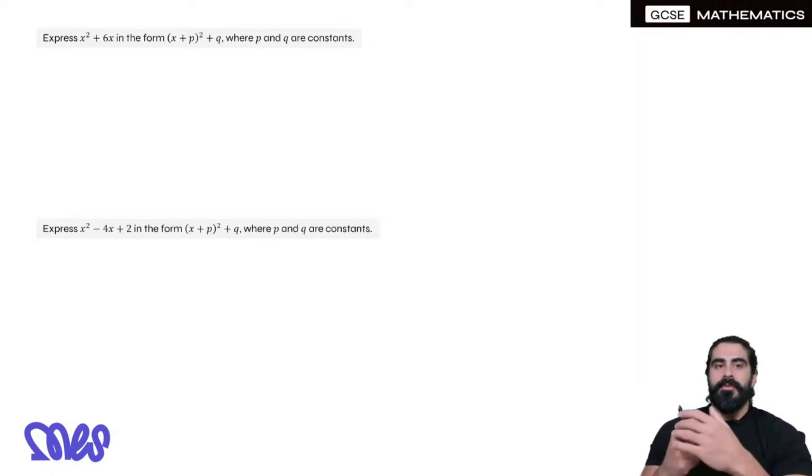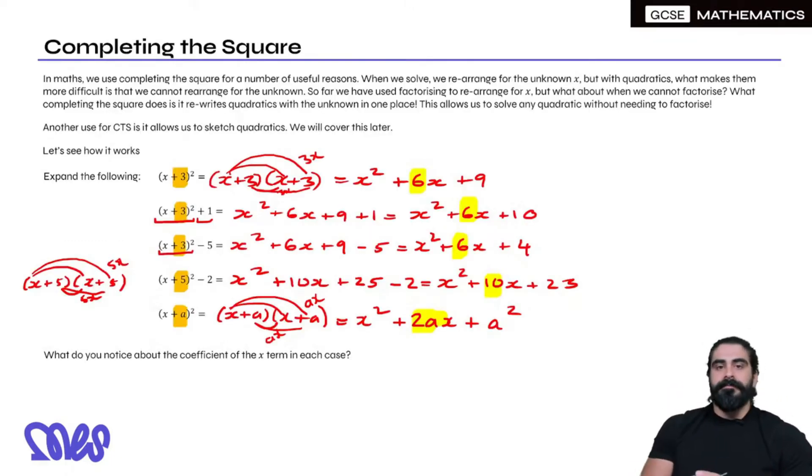The key thing with completing the square is that we only complete the square on the x² and the x term. We only worry about these bits because it's all about the coefficient of x.